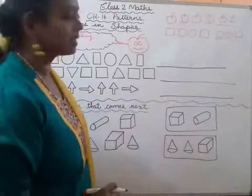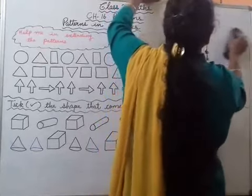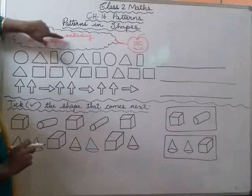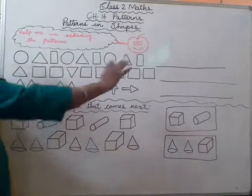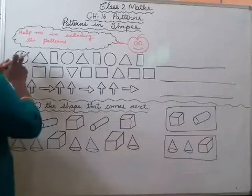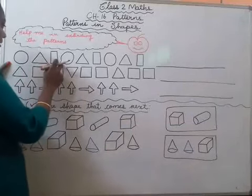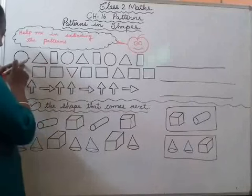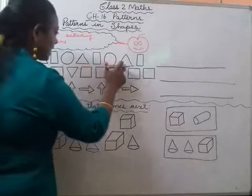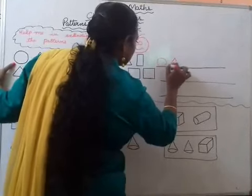Same way we are going to do patterns in shapes. First, we are going to see patterns in shapes. Help me in extending the patterns — we are going to extend the patterns. See the patterns, how it is going on, then we are going to fill the blanks. What is this? Circle, then triangle, rectangle, then again circle. The pattern is: circle, triangle, rectangle — circle, triangle, rectangle — then again circle, triangle, rectangle.